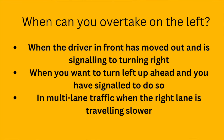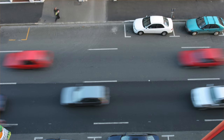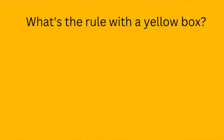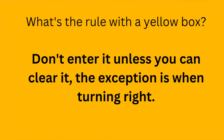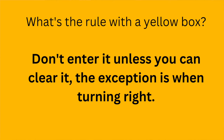This could be in an urban area like on a one-way street where there are two lanes going the one way. Next question: what's the rule with the yellow box? Do not enter the yellow box unless you can clear it. The exception is when you're turning right, like at traffic lights for example. Be aware the tester might phrase it as 'when are you allowed to enter the yellow box' or 'what's the exception for stopping in a yellow box,' so just be prepared for the different ways they might phrase that question.